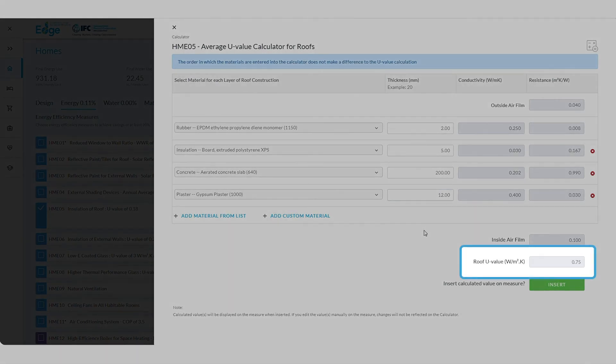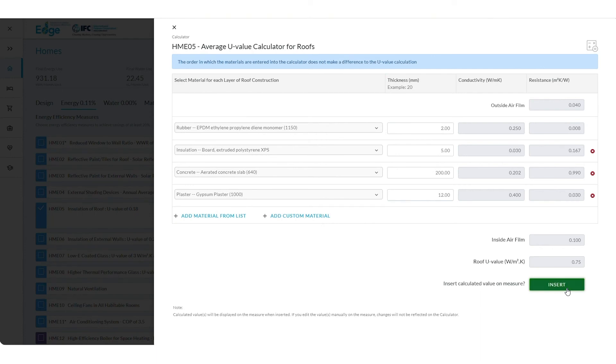Edge will automatically calculate the effective U-value. Click Insert so your calculation appears within the measure.